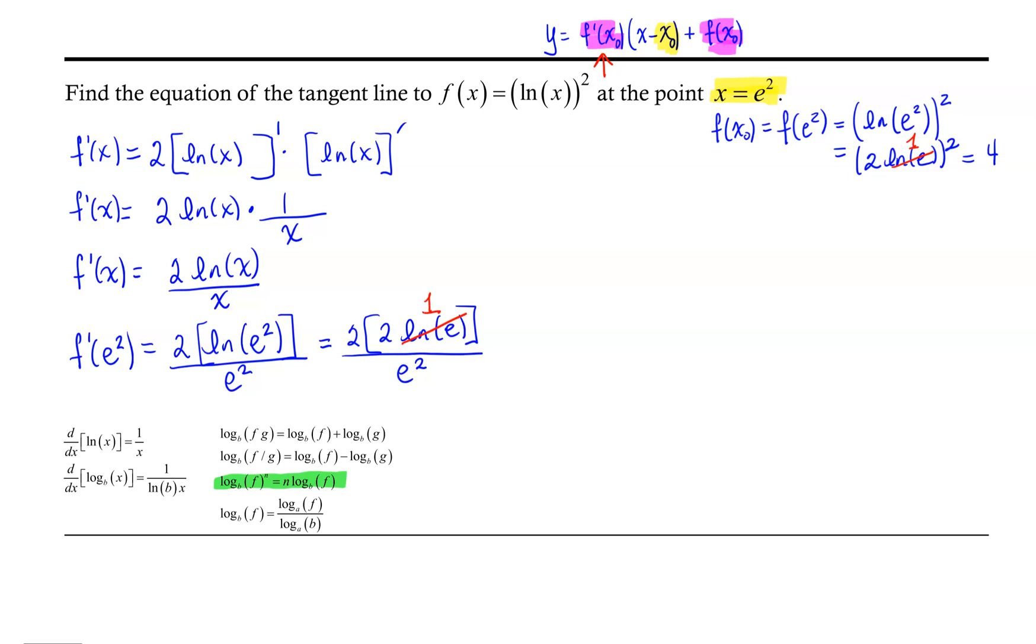So then our derivative, which is the slope of our tangent line, is going to be 4/e², or we could write that as 4e⁻².